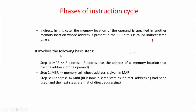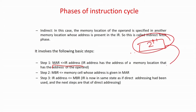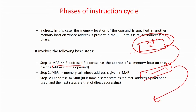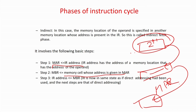In indirect mode, the memory address register first gets the address from the instruction register. The memory gives the value at that location to the memory buffer register — but that value is itself another address. That address is fed again to the memory address register, and finally the actual data comes out. This is the indirect addressing: multiple steps allowing a wider range of memory to be accessed.